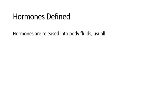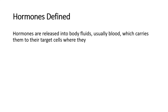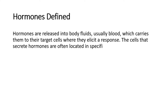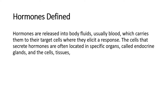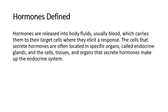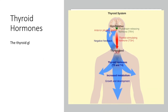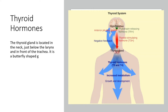Have a look at the objectives for hormones. Hormones are released into body fluids, usually blood, which carries them to their target cells, where they elicit a response. The cells that secrete hormones are often located in specific organs called endocrine glands, and the cells, tissues, and organs that secrete hormones make up the endocrine system. The thyroid gland is located in the neck, just below the larynx and in front of the trachea. It is a butterfly-shaped gland with two lobes that are connected.